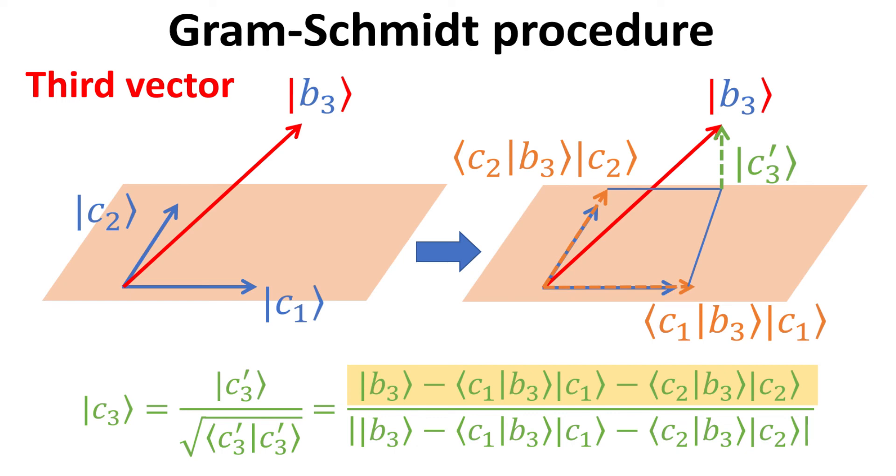This is best illustrated geometrically in the right figure. The components of B3 collinear with C1 and C2 can be obtained by projecting B3 onto C1 and C2 respectively. The component of B3 that is orthogonal to the orange plane is then B3 minus the components which are collinear with C1 and C2. And the explicit expression is shown in the yellow box. Thus C3 is given by this expression divided by its norm as shown below.